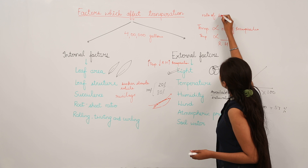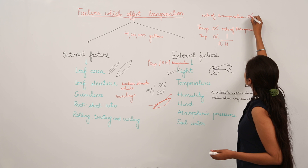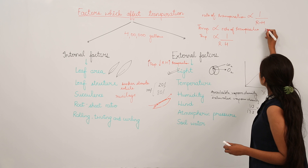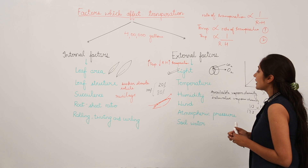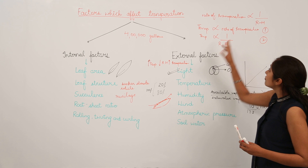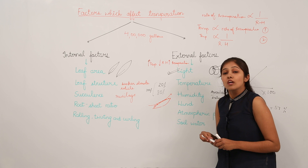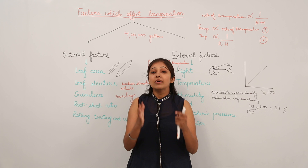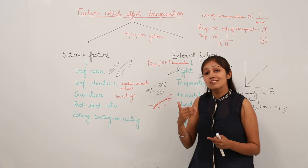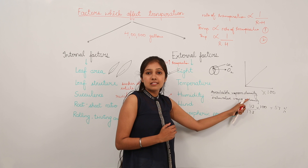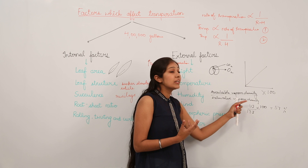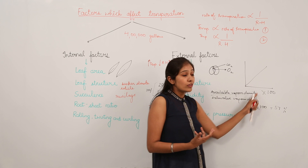To summarize: temperature has a direct influence on rate of transpiration; humidity is inversely proportional to transpiration rate. Relative humidity formula: available vapor density / saturated vapor density × 100, calculated as a percentage. When air is fully saturated with vapors, it is 100% saturated.